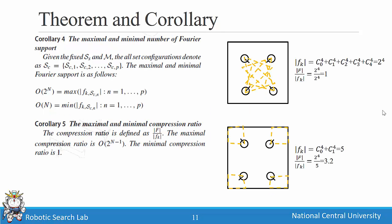Another question is: what is the maximum and minimum number of Fourier support? When each set overlaps every other, we have two-to-the-four Fourier support, and the compression rate equals one — meaning we cannot compress at all. In the opposite case, with no sensing overlap, the Fourier support consists of the zero order and first order only, giving n+1 terms, so the compression rate is two-to-the-four divided by five, approximately 3.2.